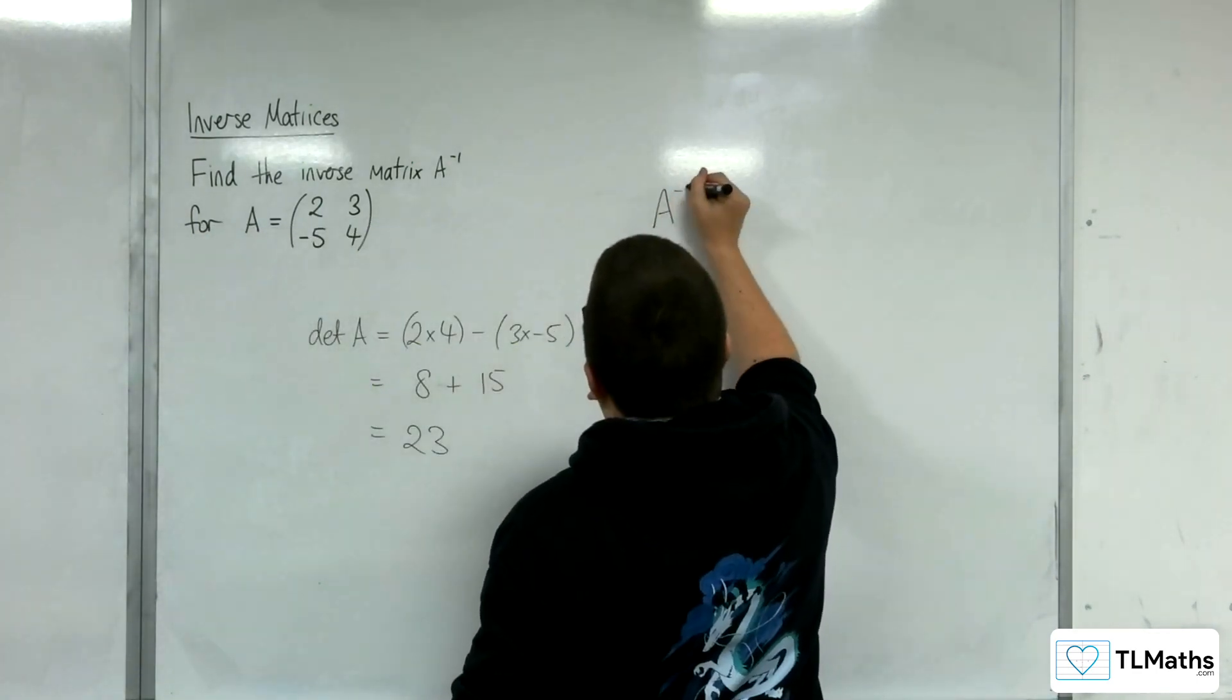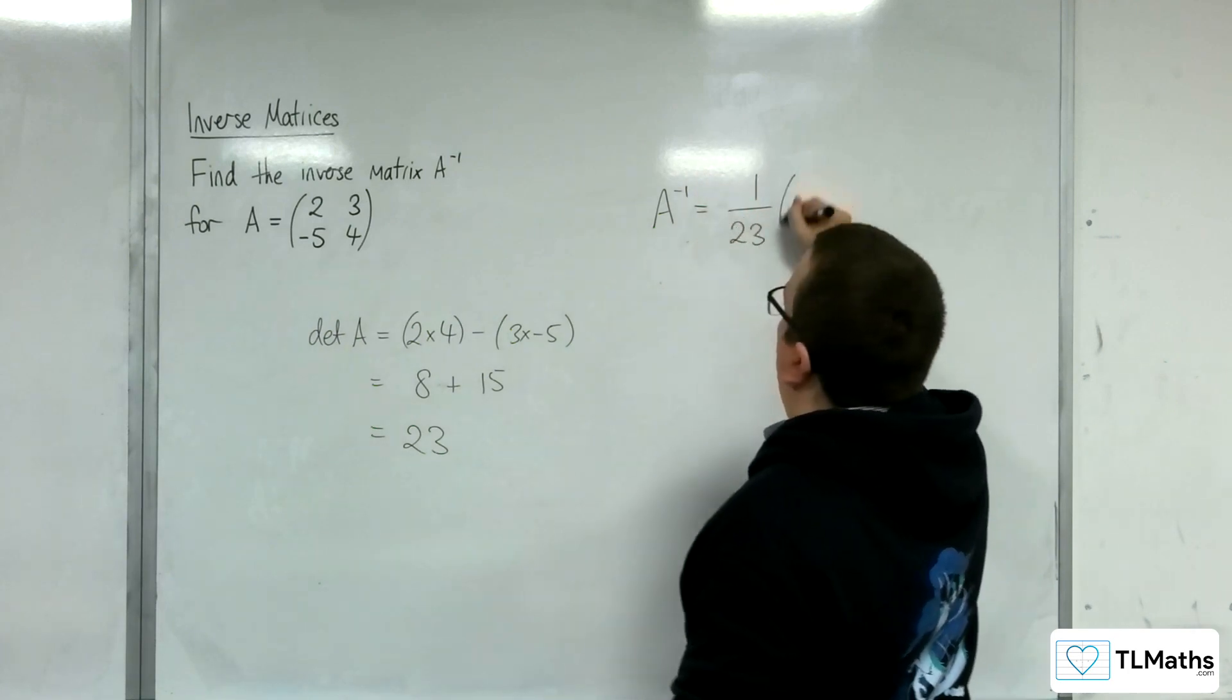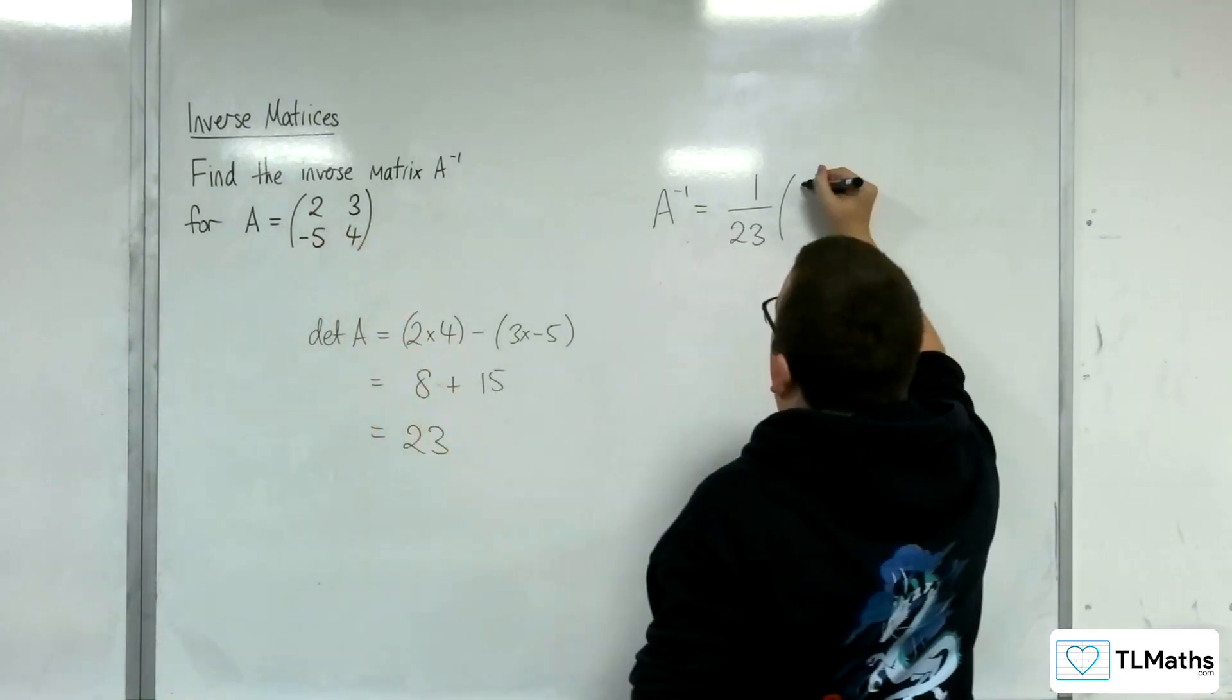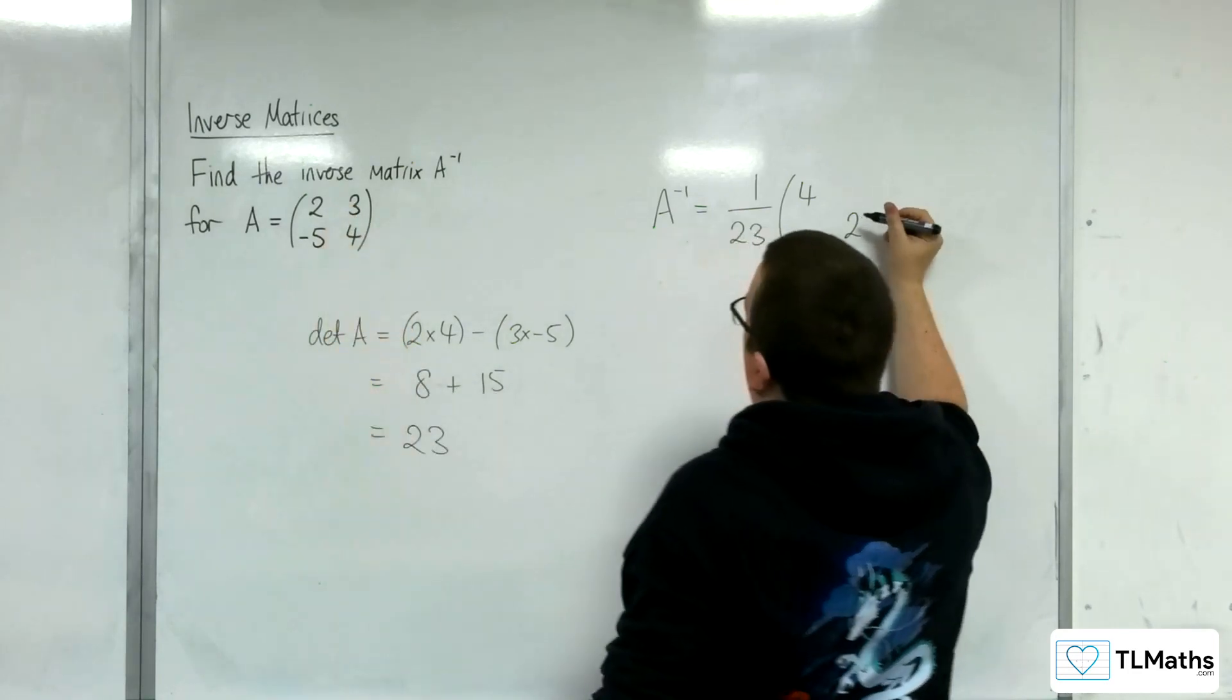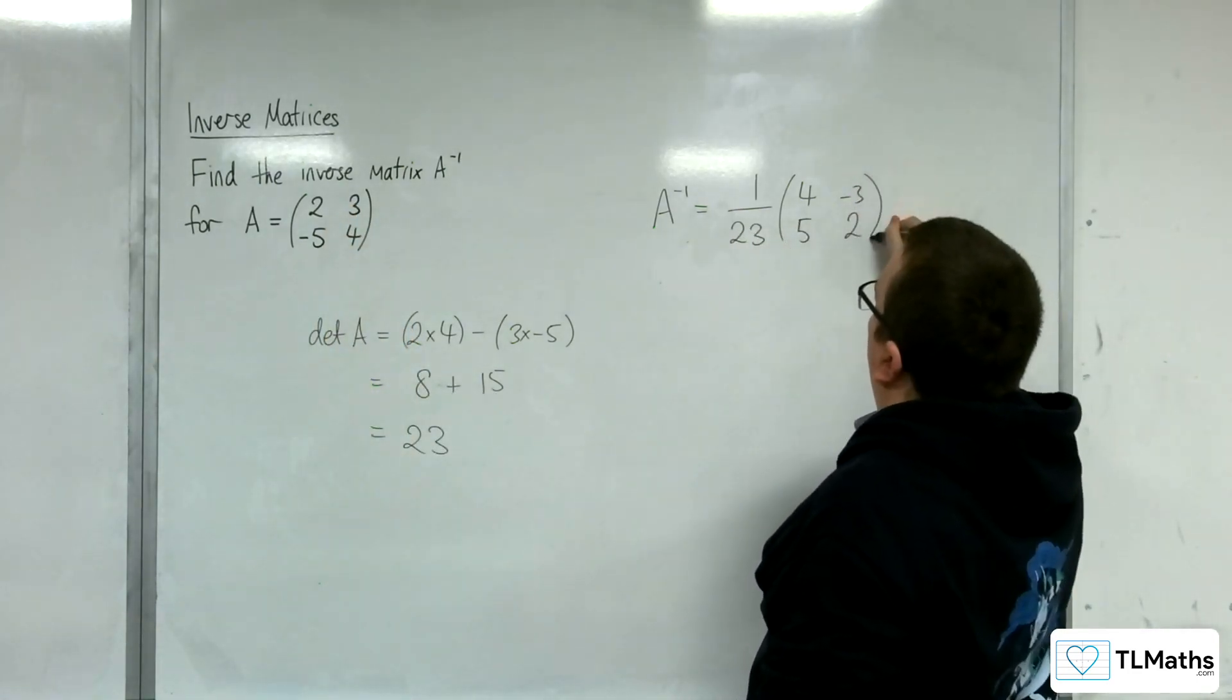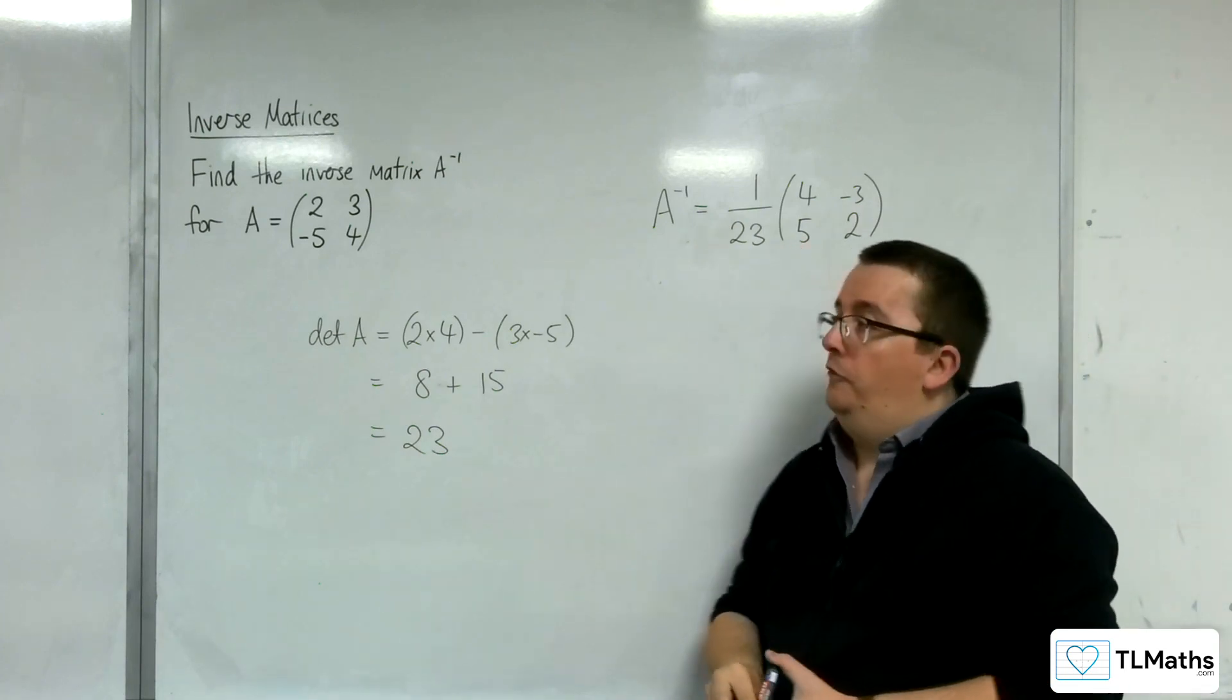Then the inverse matrix of A is 1 over the determinant, 23. The 2 and the 4 switch places, so 4 then 2, and the 3 and the -5 change sign, but don't swap places. And so that is the inverse matrix for A.